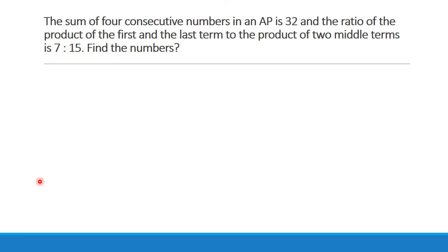The sum of four consecutive numbers in an AP is 32, and the ratio of the product of the first and last term to the product of the two middle terms is 7 is to 15. We have to find those numbers, that is the first term into last term to the two middle terms is given by the ratio 7 is to 15.